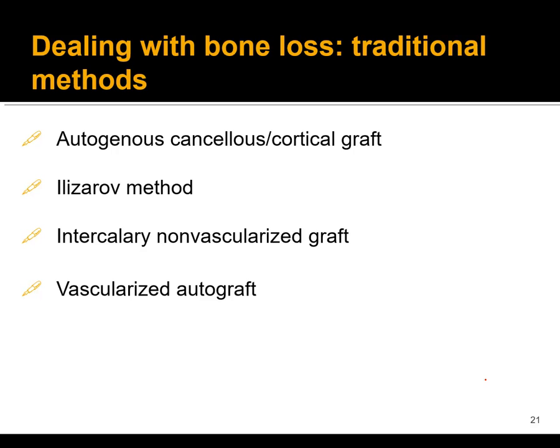Extreme shortening acutely can also be potentially a vascular problem — you could lead to kinking of the vessels and flow issues. But to some degree, shortening is potentially possible acutely, and you could always lengthen something later. If you're dealing with an area of bone you need to reconstitute, there's autogenous cancellous and cortical grafts, the Ilizarov method, intercalary non-vascularized graft, and vascularized autografts — just some of the major options.